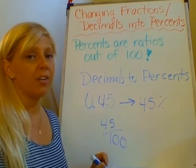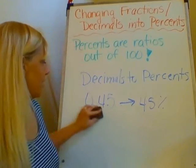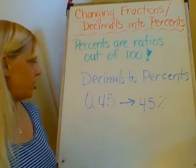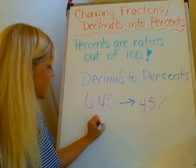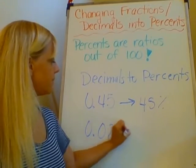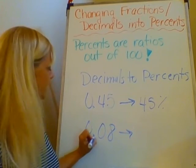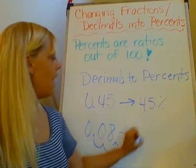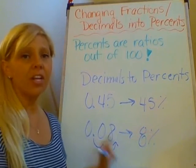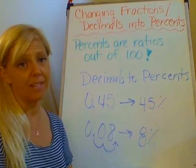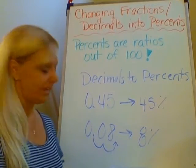What about if I don't have a two-digit number and I just have 0.08? Again, I'm going to move my decimal point two places — one, two — and I end up having 8%. A lot of sixth graders will just say this is 80%, so be careful. That is how you change a decimal to a percent.